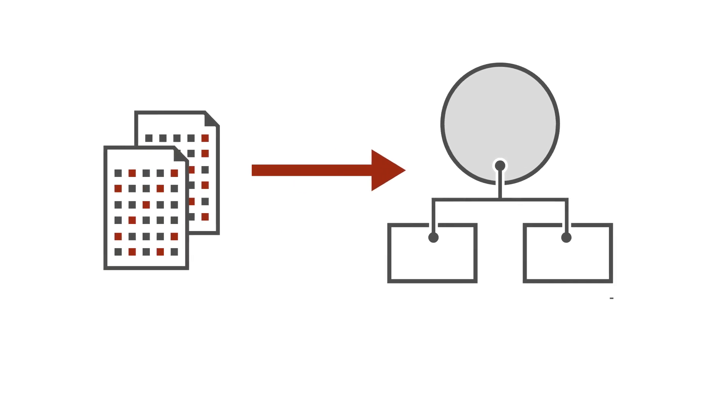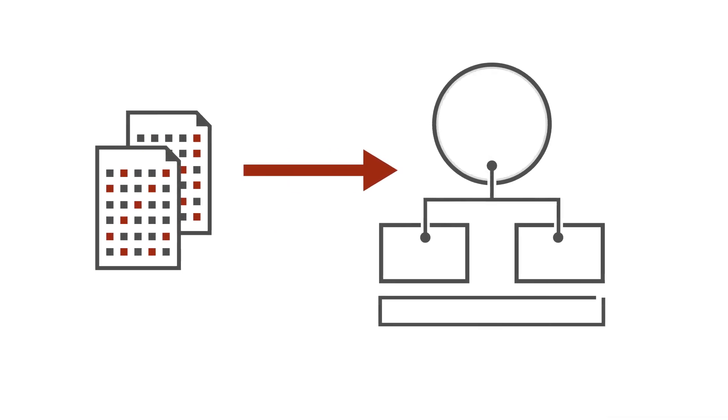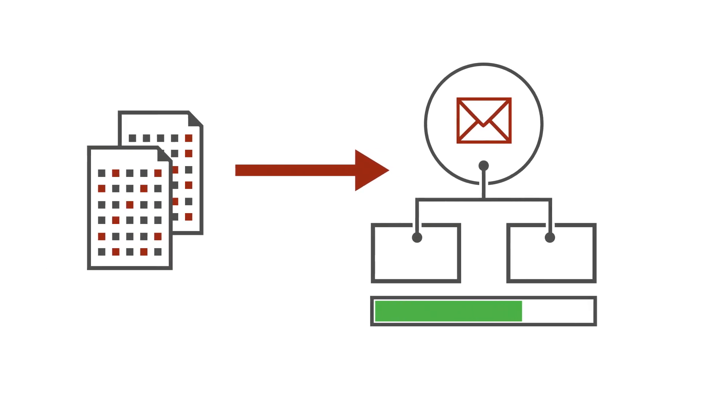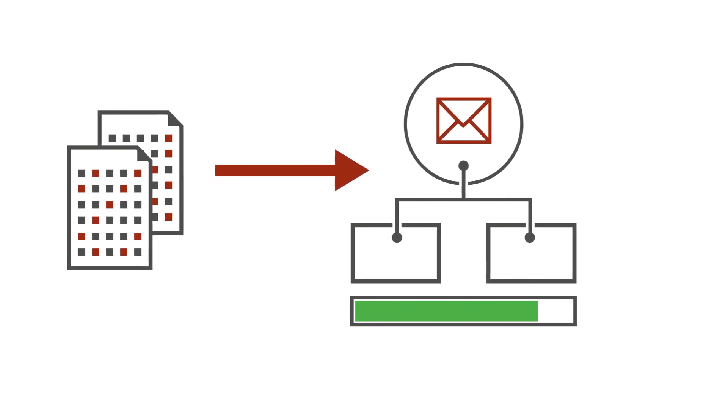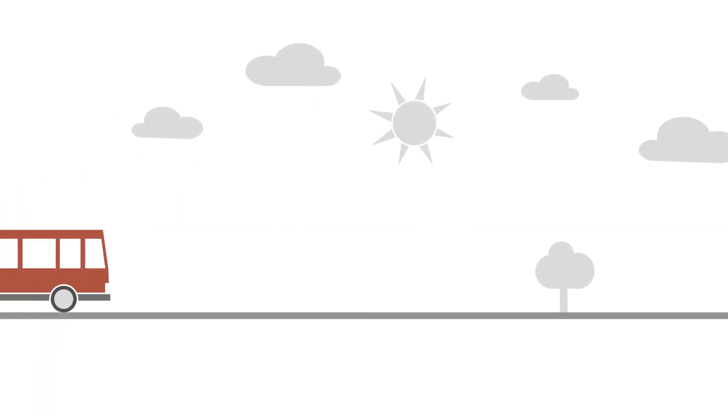The experts then program models. These can, for example, predict how successful a letter to a defaulting payer is likely to be. The way these models are used can be likened to a bus tour.